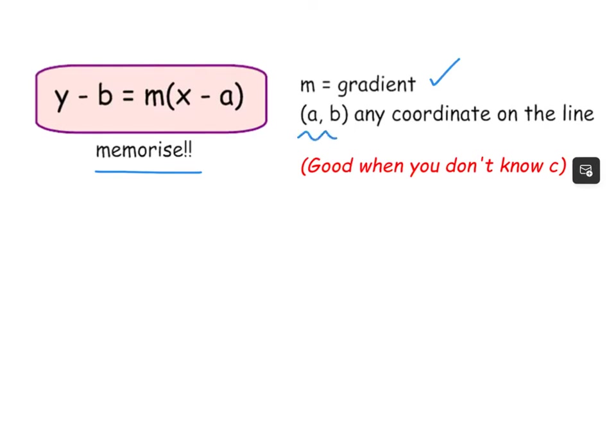m is still the gradient, so we already know how to get that. This bit's slightly new though. a, b, so we take any coordinate we prefer and we label it a, b and then that's what we substitute in here for a and b. And then there's a bit of rearrangement to do. And as I said, this is especially good when you don't know your c value.